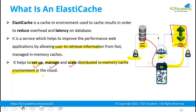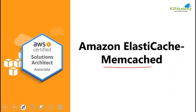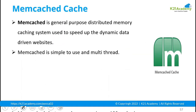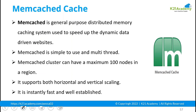You can set up, manage, and scale your caching environment in the cloud. ElastiCache supports two open-source in-memory engines: Redis and Memcached. These are the two most commonly used in-memory cache engines, and Amazon provides a fully managed service for both — Amazon ElastiCache for Memcached and Amazon ElastiCache for Redis.